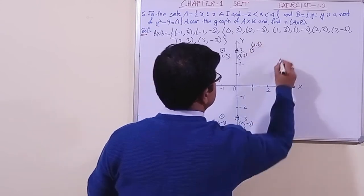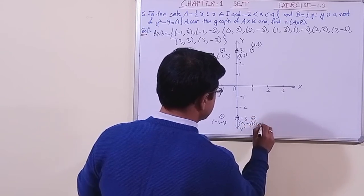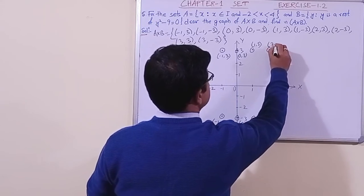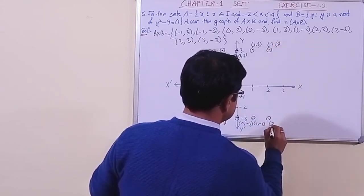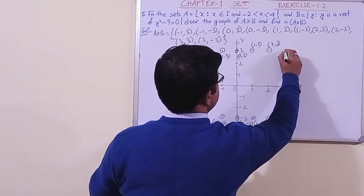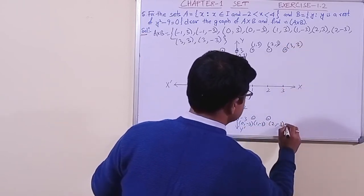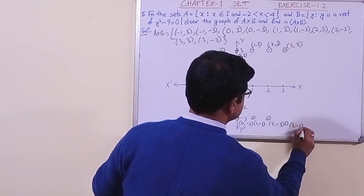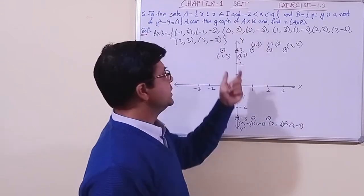Continuing to plot: (1, 3), then (1, minus 3). Then (2, 3), (2, minus 3). Then (3, 3), and finally (3, minus 3). In this way we have drawn the graph of A cross B.